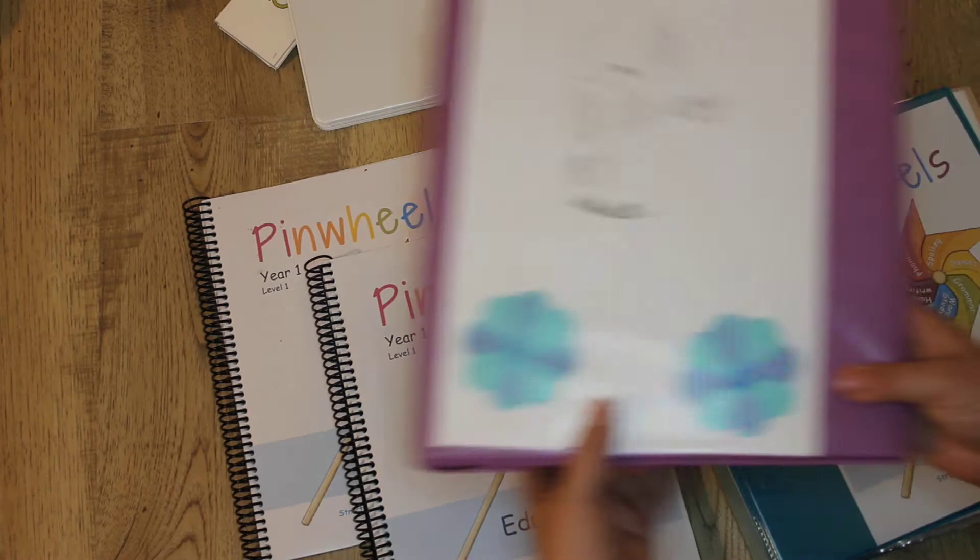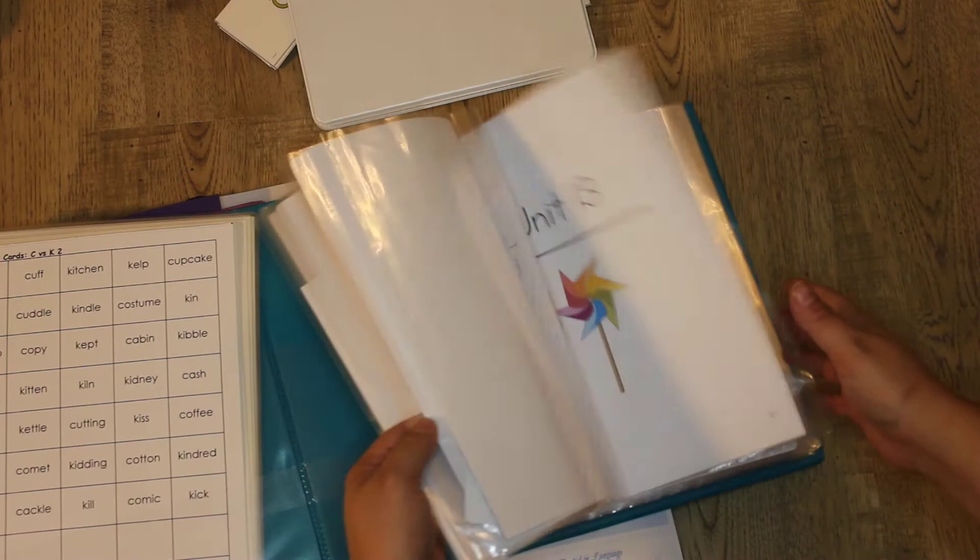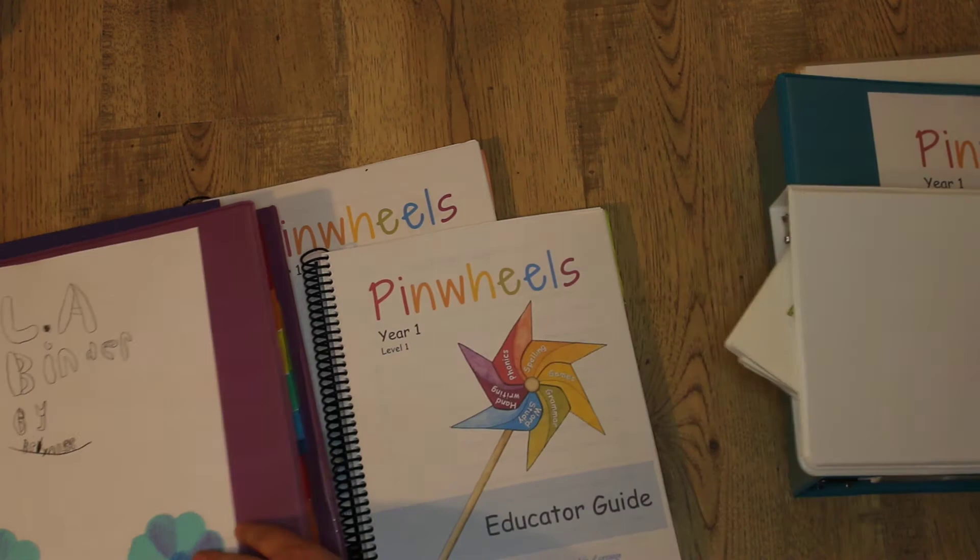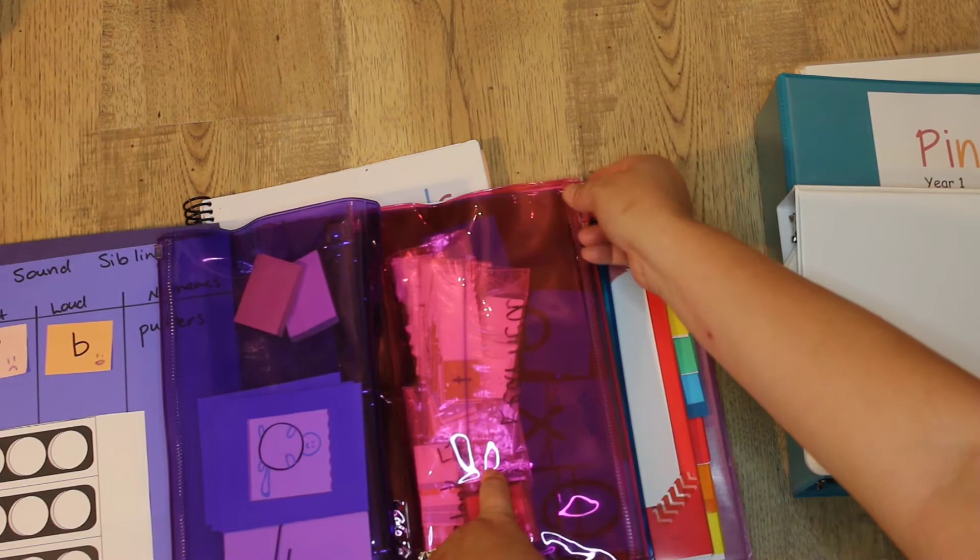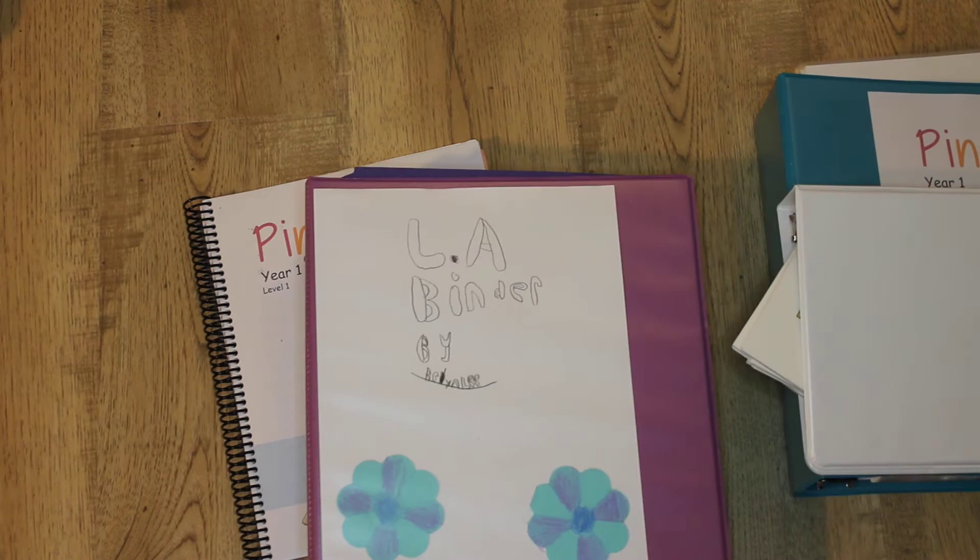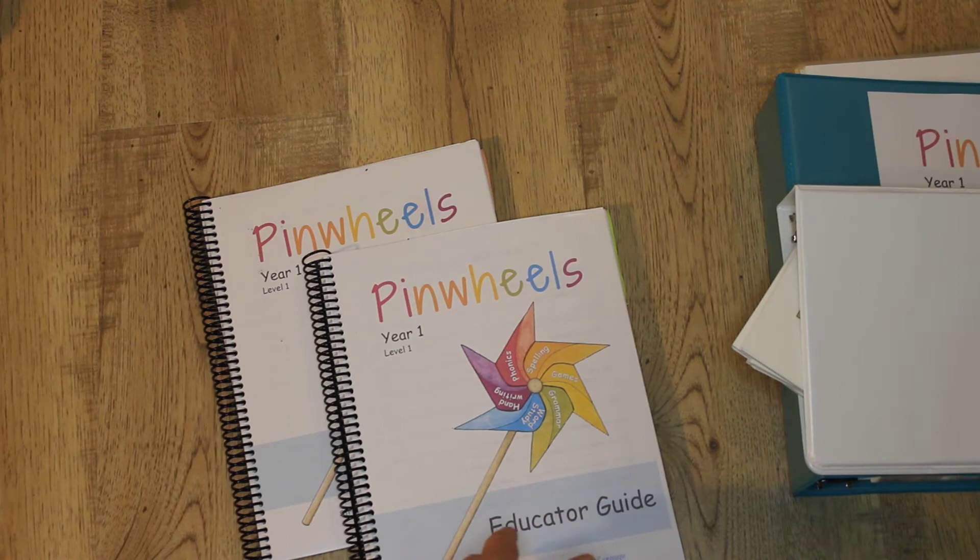The one thing I will say about this program is it is very intimidating in the beginning because you have to print all this, get it bound, set up the binder for the student, then you have a binder for yourself with all of the additional resources like the readers and the extra materials. Then you have to even create some of the games. You have to literally build all of this yourself. The letter tiles - they do have letter tiles just like All About Reading and Foundations, but you have to make everything. This took me several days to get together, but if you know that ahead of time you can take the time that you need to do it. It's not hard, it's just time-consuming.